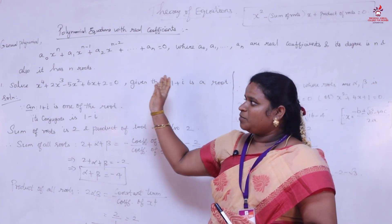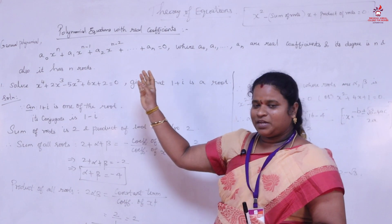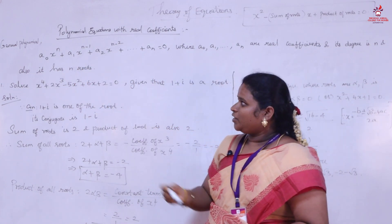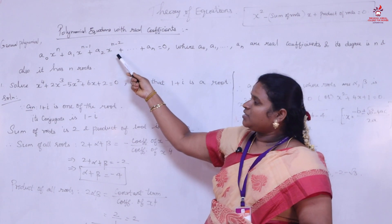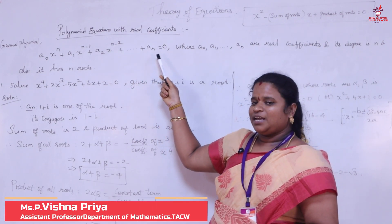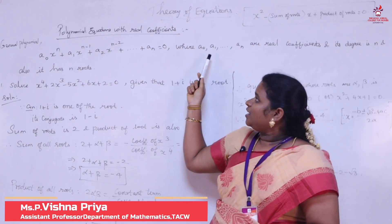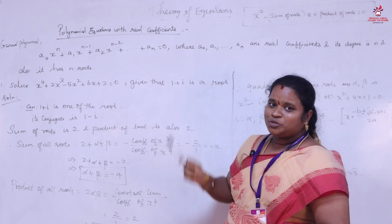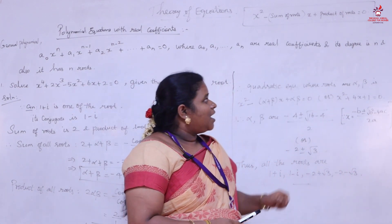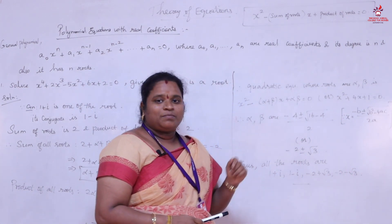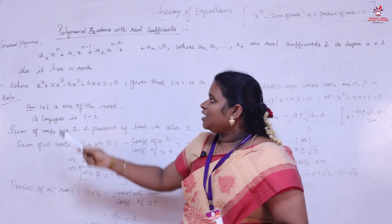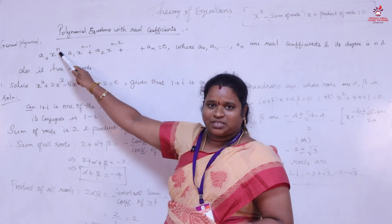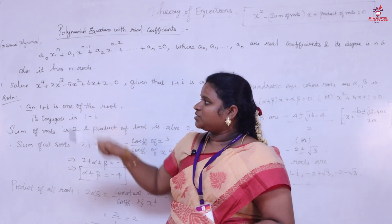Let us consider a general polynomial of the form: A₀xⁿ + A₁xⁿ⁻¹ + A₂xⁿ⁻² + ... + Aₙ = 0, where A₀, A₁, A₂, ..., Aₙ are called real coefficients and its degree is n. It has n roots because the highest degree of this equation is n.